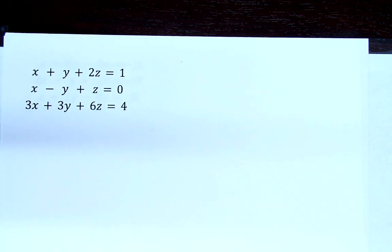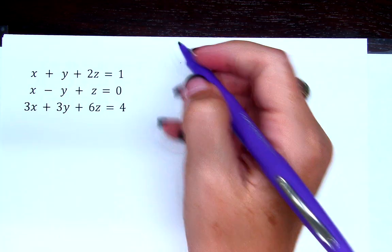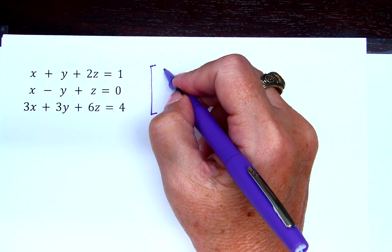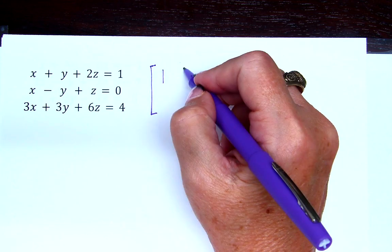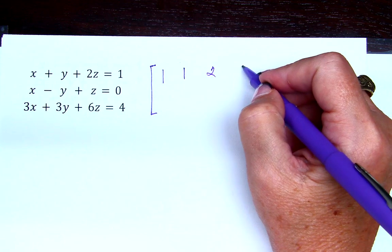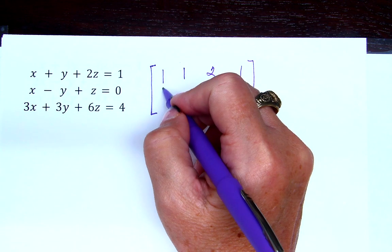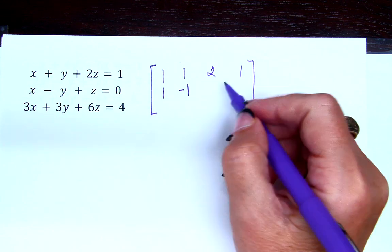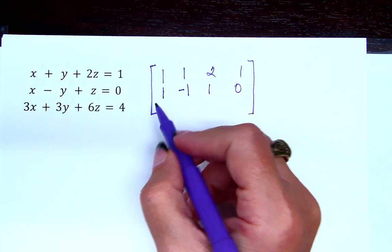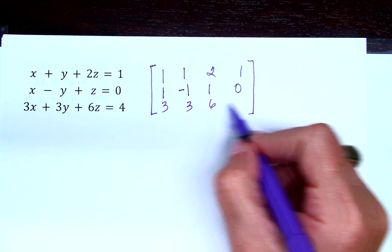Okay, then let's talk about this example. Let's do this example together. x plus y plus 2z equals 1. 1x minus y plus z equals 0. 3x plus 3y plus 6z equals 4. So what does my coefficient matrix look like? 1, 1, 2, 1. 1, negative 1, 1, 0. 3, 3, 6, 4.